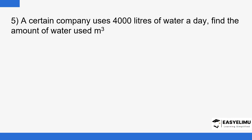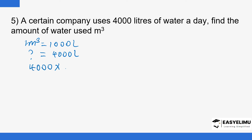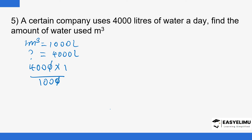A certain company uses four thousand liters of water a day. Find the amount of water used in cubic meters. Since one cubic meter equals one thousand liters, we do cross multiplication: four thousand times one, divided by one thousand. The zeros cancel, and you have four divided by one, which is just four. So that is four cubic meters.